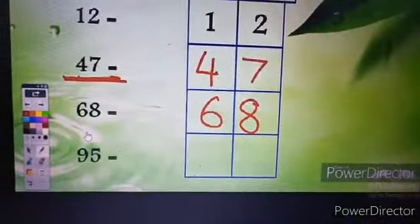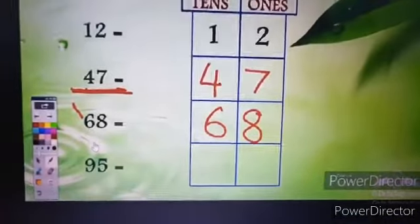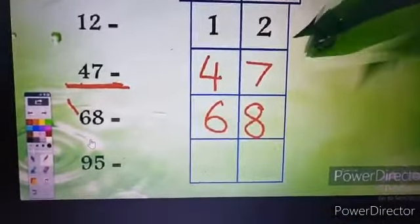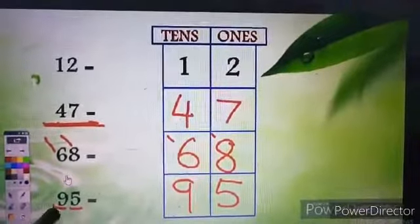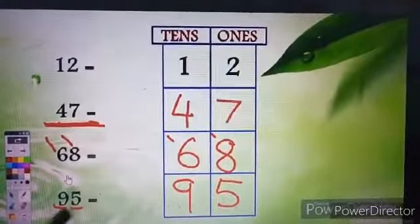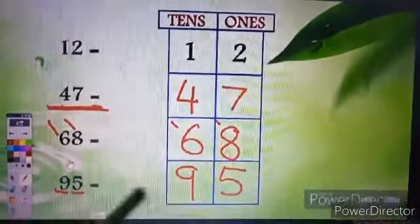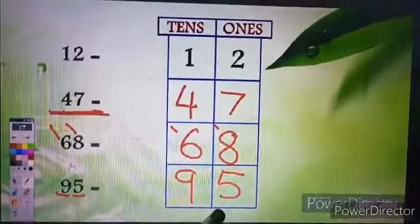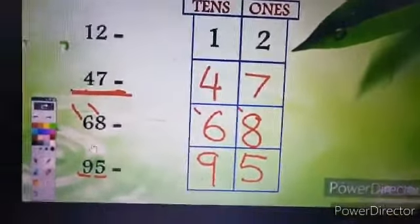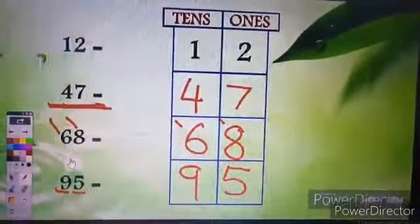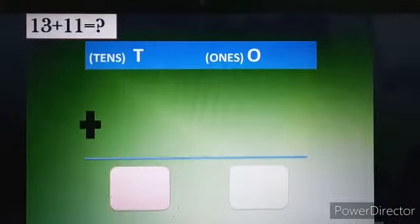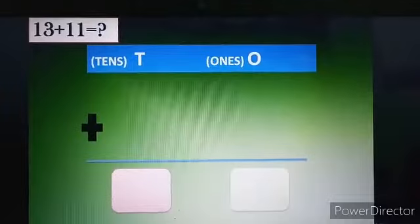Now let's see the next number that is 95. Here also we will do the same thing. 9 will sit in the tens room and 5 will sit in the ones room. Now all of you understood the place value of two digits. Now let's practice some examples.